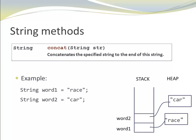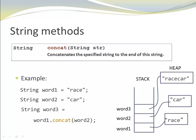So here is an example. I could have two strings, word one points to race, word two points to car. And now I declare a variable, word three, and I assign it word one, concat word two. So, word two is appended at the end of word one, race and car together, makes race car. A new string is created and word three points to this new string. The original strings, word one and word two, remain unchanged.